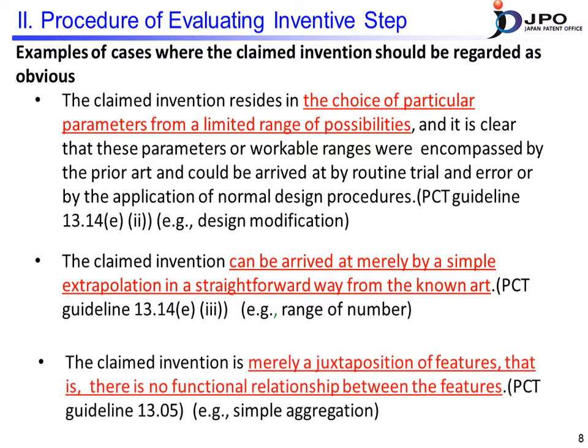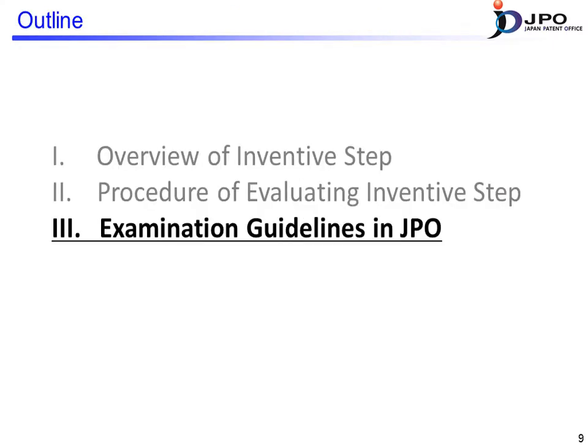The third example is the case where the claimed invention is merely composed of juxtaposed characteristics. In other words, it refers to a case where there is no functional relationship between the combined characteristics, and the claimed invention is a mere compilation among prior arts and cannot achieve new technical results.